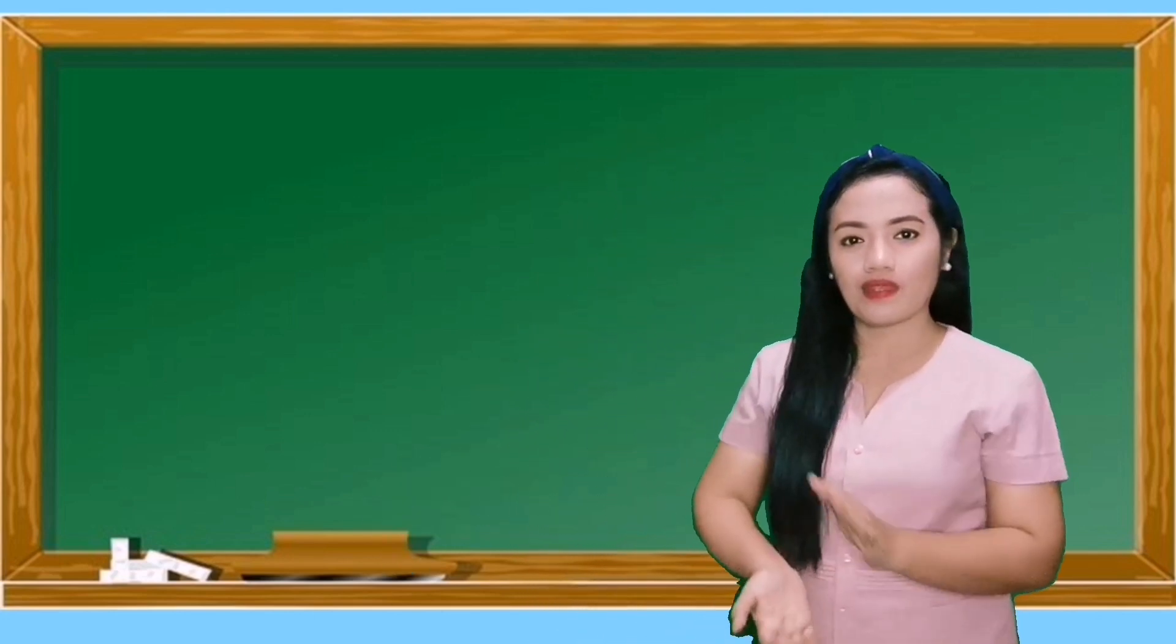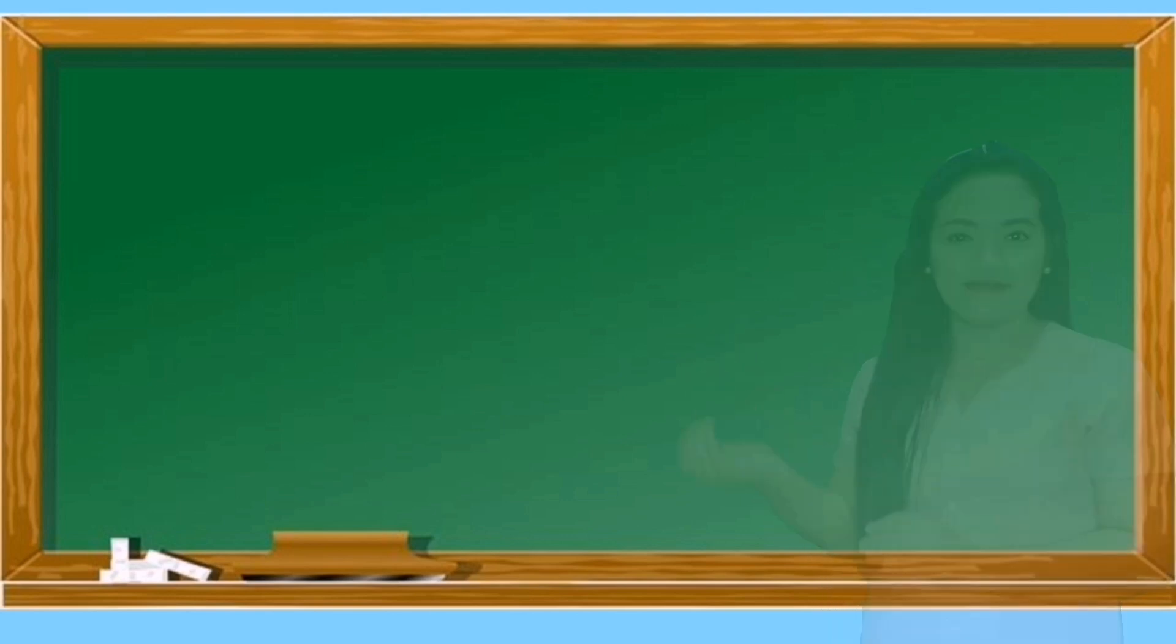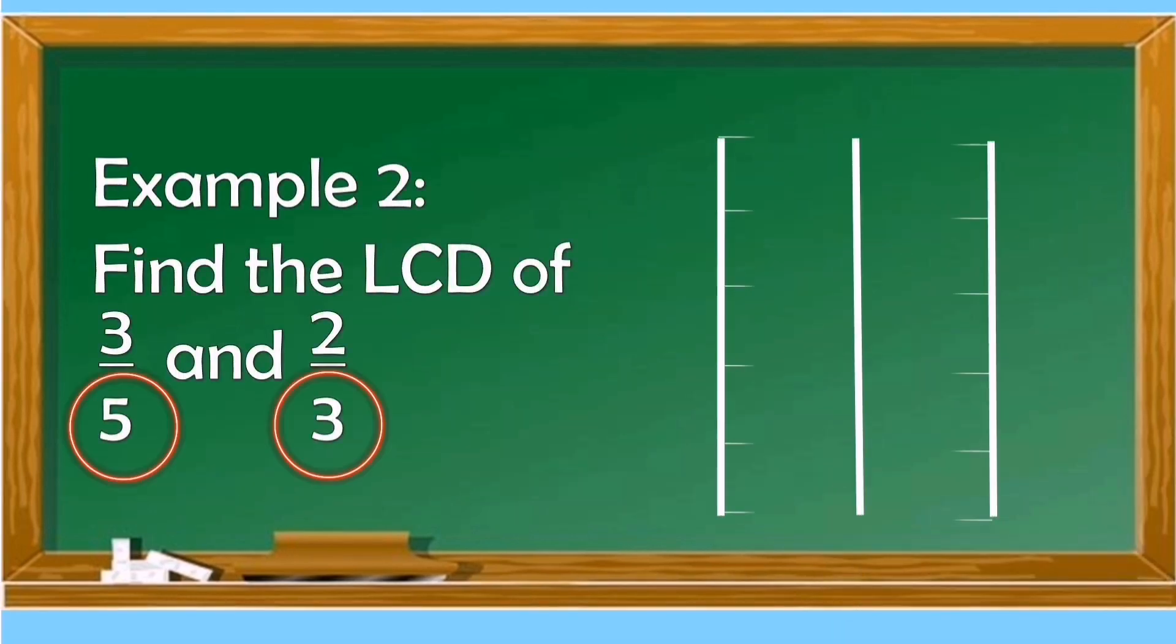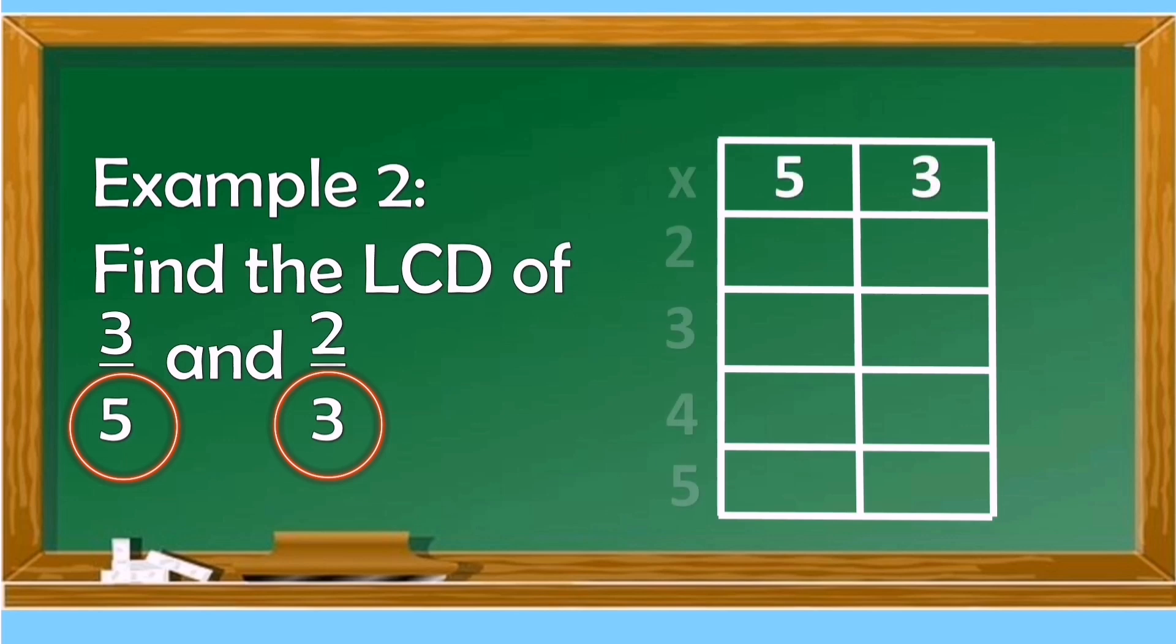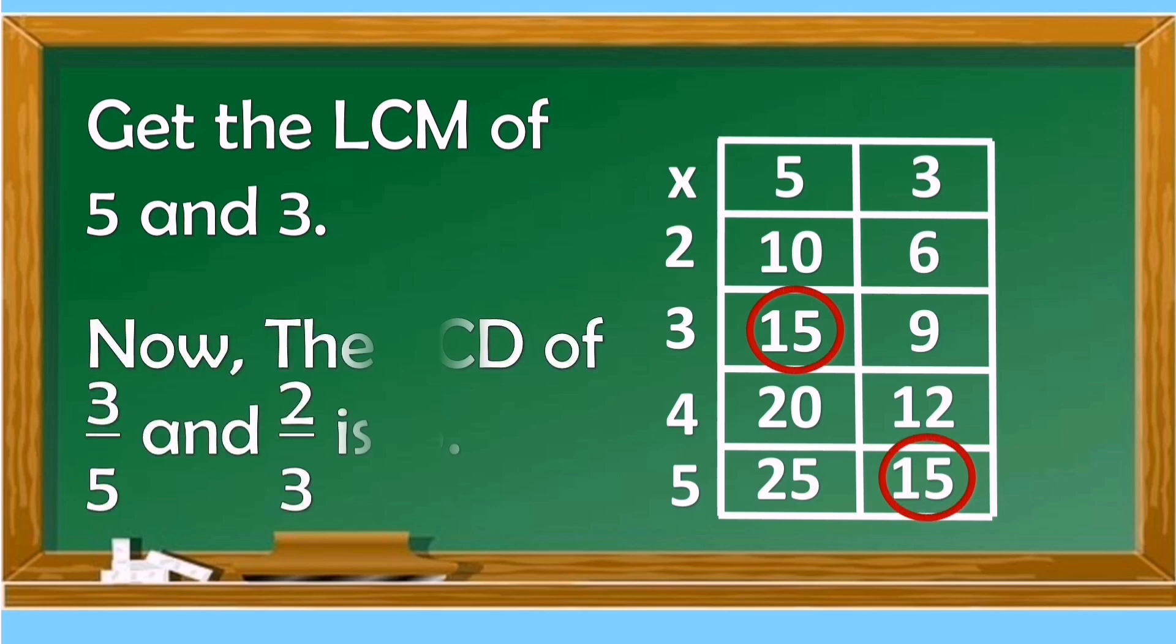Are you ready for another example grade 6? This time let us find the LCM of 3/5 and 2/3. Let us get the denominators 5 and 3. With the same process we will multiply 5 and 3 by the counting numbers. 2 times 5 is 10, 2 times 3 is 6, 3 times 5 is 15, 3 times 3 is 9, 4 times 5 is 20, 4 times 3 is 12, 5 times 5 is 25, and 5 times 3 is 15. The least common multiple of 5 and 3 is 15.